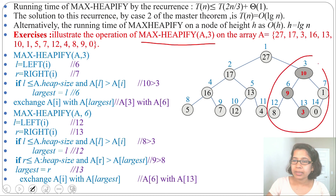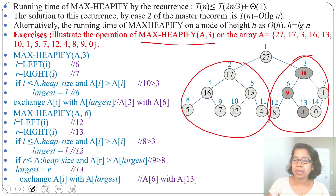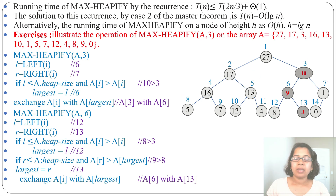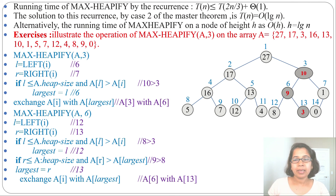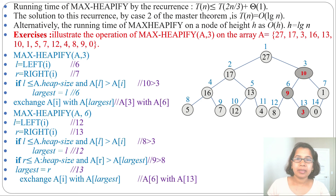After calling the max heapify procedure, we have heapified this tree. The right part is now a heap and the left part was already a heap, so we can say this is a valid heap. In today's lecture I discussed the max heapify procedure with two examples. In the next lecture I will discuss building a heap. If this lecture was helpful, please like and subscribe — thank you.